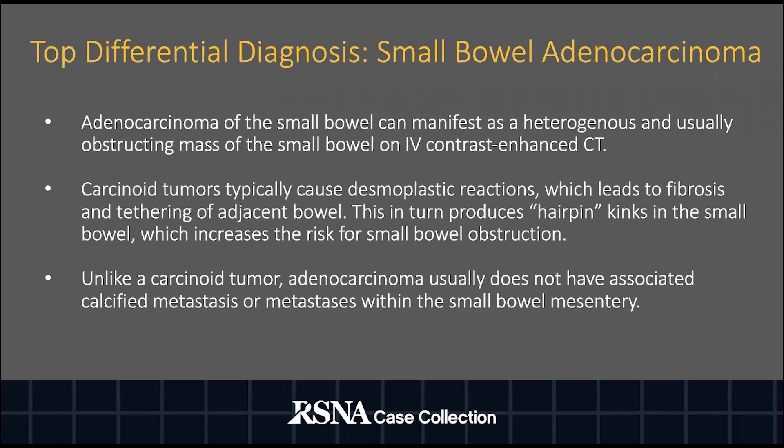Adenocarcinoma manifests as a heterogeneous and commonly obstructing mass. Carcinoid tumors can similarly cause bowel obstruction; however, they cause desmoplastic reactions which lead to fibrosis and tethering of the adjacent bowel, producing hairpin kinks and increasing the risk for bowel obstruction. Furthermore, unlike a carcinoid tumor, adenocarcinoma does not have calcified mesenteric metastasis.